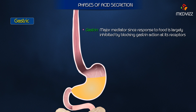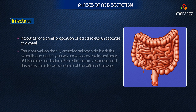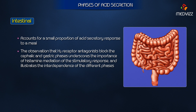The intestinal phase accounts for only a small proportion of the acid secretory response to a meal, and its mediators remain controversial. The observation that H2 receptor antagonists block the cephalic and gastric phases underscores the importance of histamine mediation of the stimulatory response, and illustrates the interdependence of the different phases.